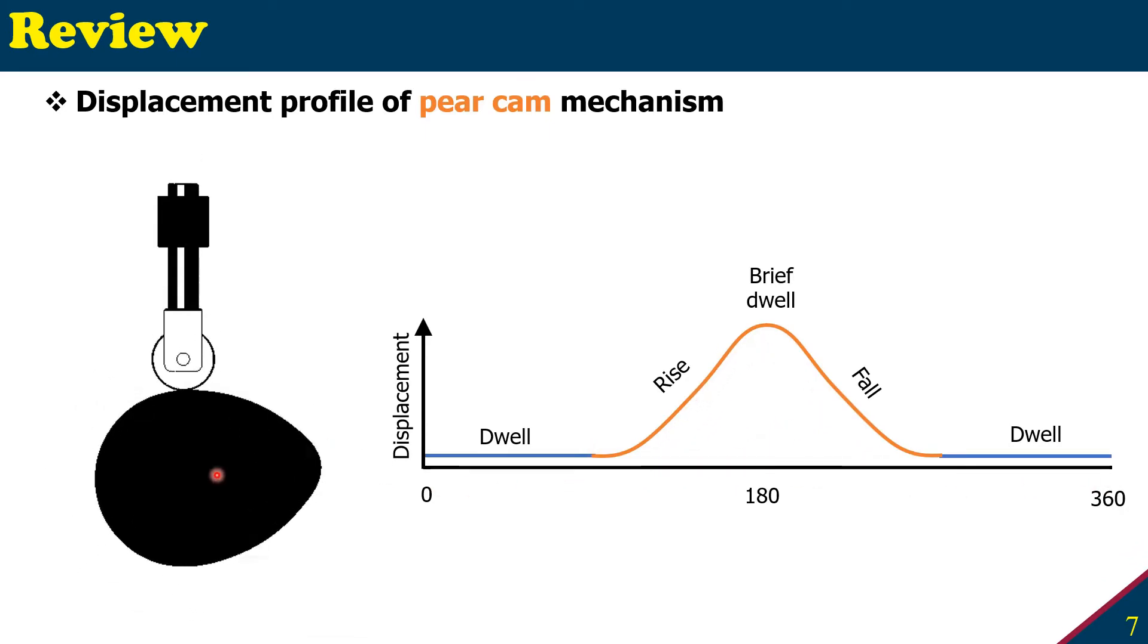If this edge, the oval edge, is not sharp and also has a circular portion, then you may still have a brief dwell time at the very point here, but sometimes you may not have that if the point is sharp.